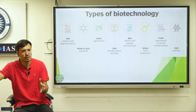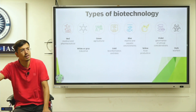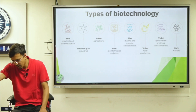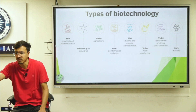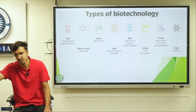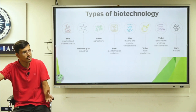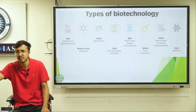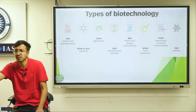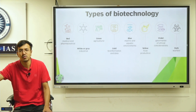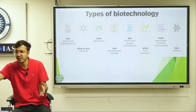We have been using biological organisms for human applications for a very long period of time. For example, in the food processing sector, at home you convert milk into curd. This happens because of the presence of bacteria — lactobacillus — which releases certain chemicals that lead to the conversion of milk into curd.